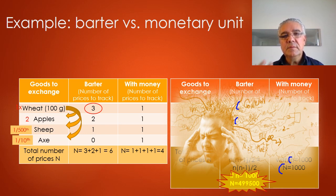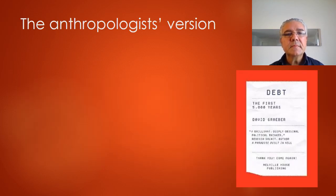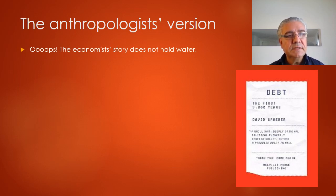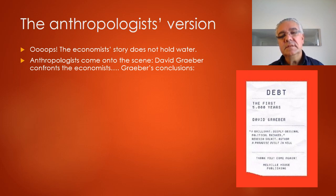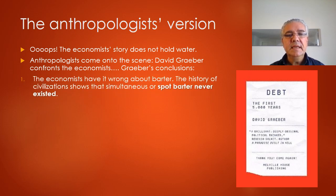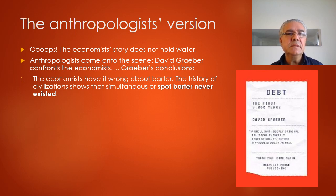Now let's look at the anthropologist's version, which is very different. David Graeber collects references from anthropological research across many civilizations, past and current. He says economists have it wrong about barter. All recorded history of civilization shows that simultaneous or spot barter — where I have my apples and you have your wheat and we exchange them right there on the spot — has never existed. The anthropologists say it simply doesn't work like this.